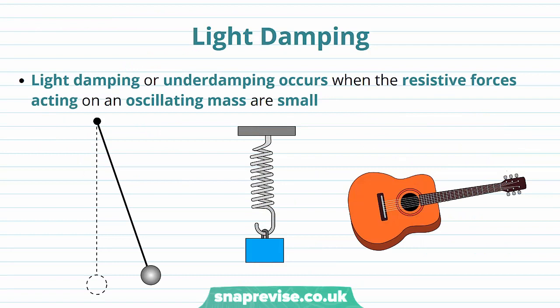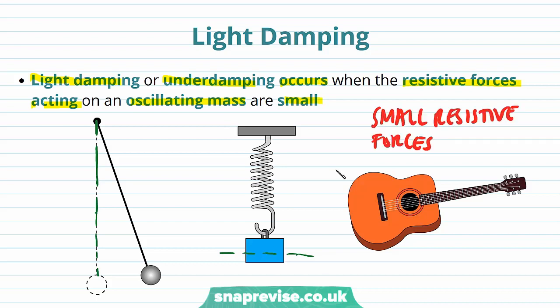Now we're going to talk in more detail about light damping, which is sometimes called underdamping. It occurs when the resistive forces acting on an oscillating mass are small. Here we have three different types of oscillator, all subjected to small resistive forces. For example, the pendulum will stop swinging due to air resistance, the mass on a spring will eventually stop oscillating due to air resistance, and the guitar string is eventually going to stop vibrating.